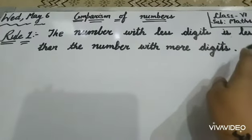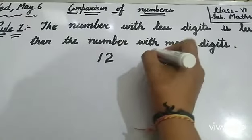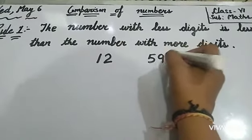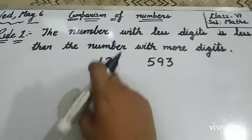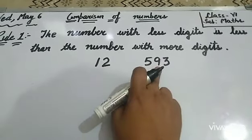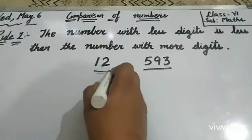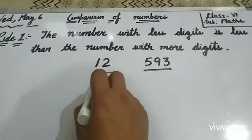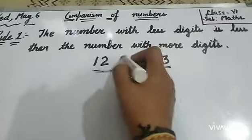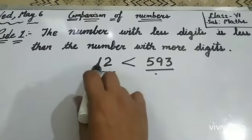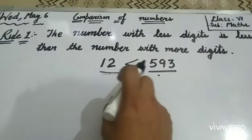We will take an example here. Suppose we have a number here, 12, and here is 593. Let's count the number of digits. Here is 1, 2, and here is 1, 2, 3. That means this number has 3 digits and this has 2. Which one is lesser? Here are 2 digits. That means this number is less than this number. So you have to say that 12 is less than 593. So the first rule is this.